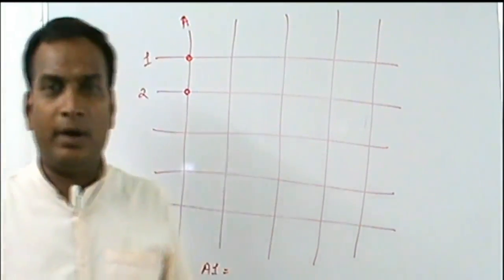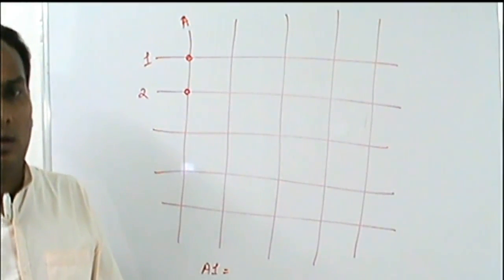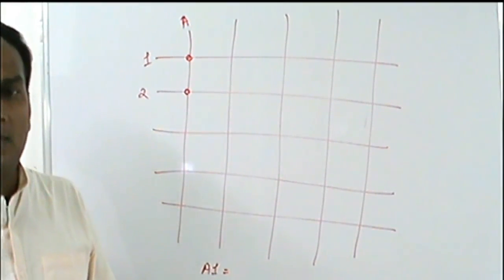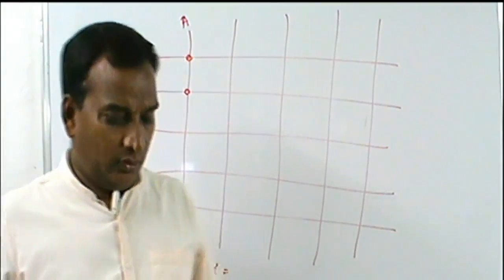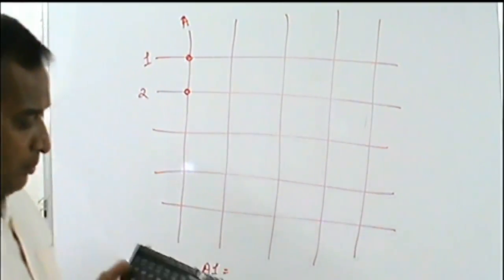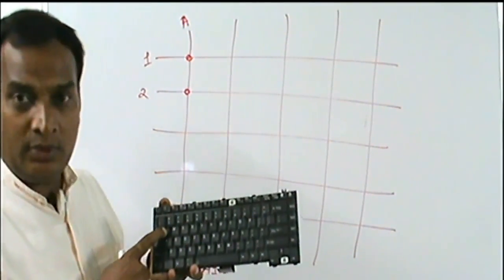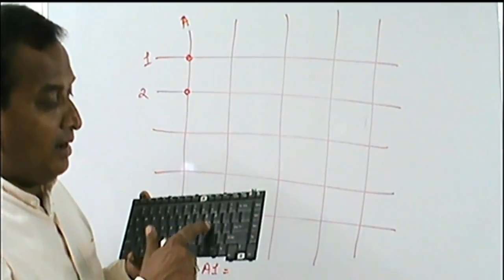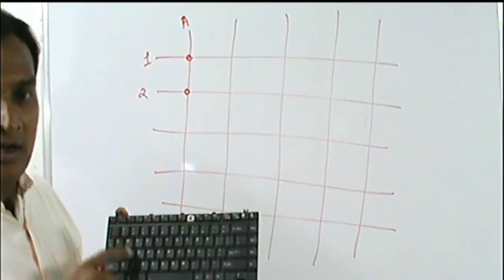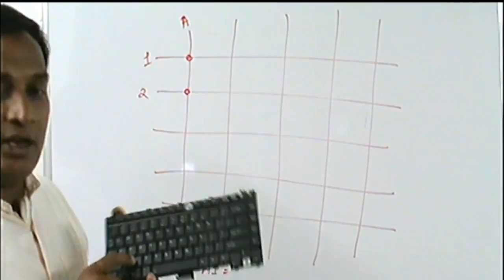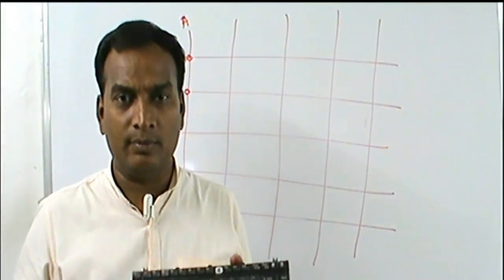If a particular key is not working, how do we identify the problem on the keyboard? If a particular key like Q, L, or P is not working, that means it is a keyboard problem.